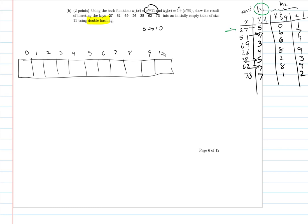So we have a 27, that 27 maps to position 5 using the first hash function. So 27 maps into position 5, 51 maps into position 7, 69 maps into position 3, 26 maps into position 4, 38 maps into position 5. And so that is our first collision here. We're trying to put 38 into position 5 and it's occupied.